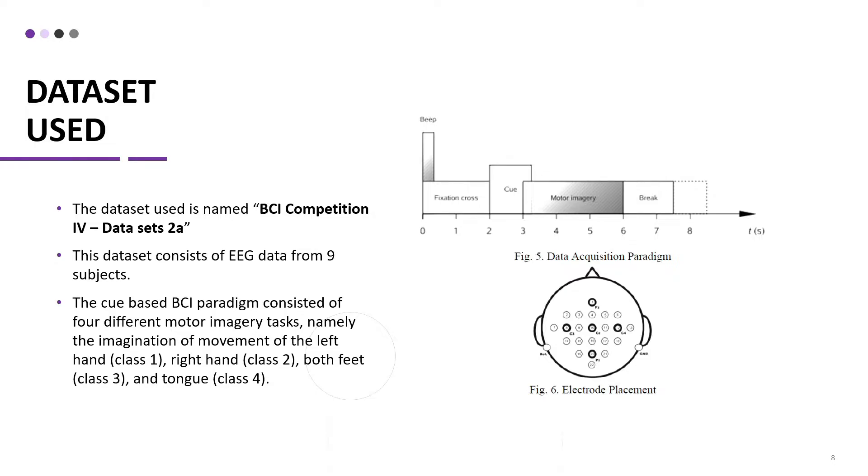The classes available are 4, so either left hand, right hand, both feet or tongue. The motor imagery task is then recorded over the span of 3 seconds, during which the sampling frequency is 250 Hz, meaning that at that time we have 750 samples for the motor imagery task for every single trial.